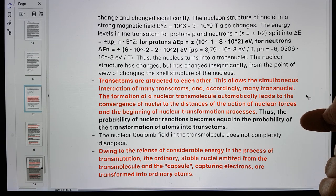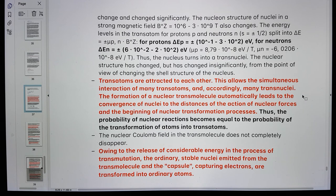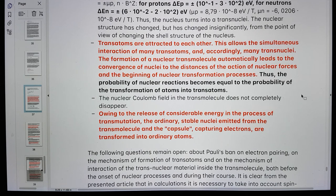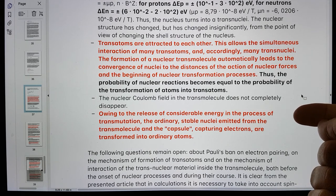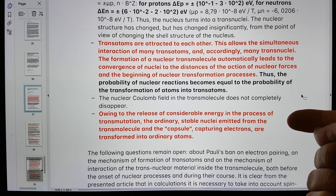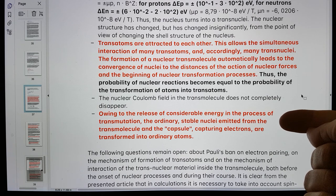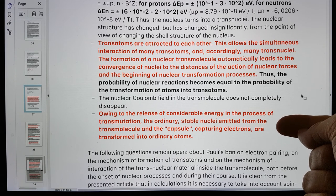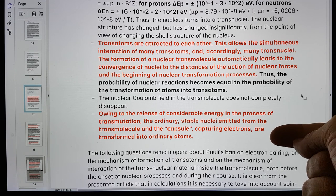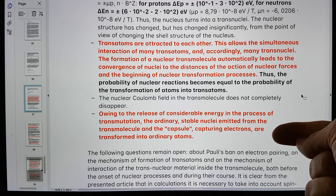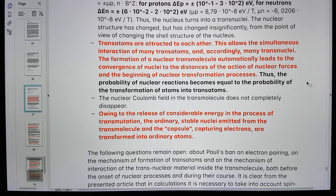The probability of nuclear reactions becomes equal to the probability of the transformation of atoms into transatoms. Owing to the release of considerable energy in the process of transmutation, the ordinary stable nuclei emitted from the transmolecule are transformed into ordinary atoms.